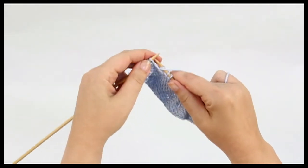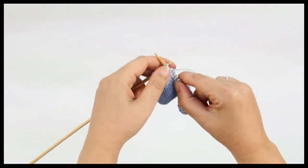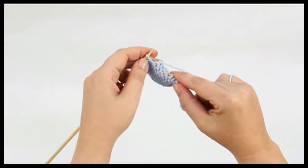You will now turn and work the next row as given in the pattern. This means we have worked two rows across these stitches whilst the remaining stitches have been left unworked.